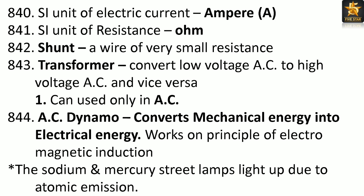SI unit of electric current: Ampere. SI unit of resistance: Ohm. Shunt: a wire of very small resistance. Transformer: converts low voltage AC to high voltage AC and vice versa; can be used only in AC. SI unit of electric potential: Volt. Electric potential is a scalar quantity.